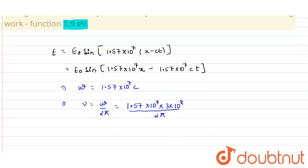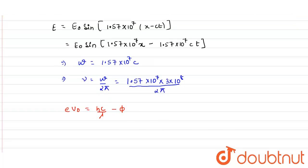Now, the relation between the stopping potential and the maximum kinetic energy is given as E times V0 equals hc upon lambda minus the work function phi, or what we can say as h nu minus phi.